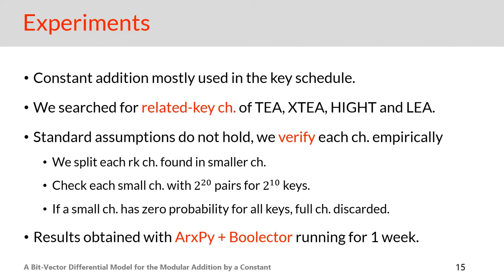We applied this model and tool to search for characteristics of ciphers including constant addition. Unfortunately, constant addition has mainly been used in the key schedules of ciphers, because up to now it was very difficult to search for characteristics of ciphers including constant addition, so designers avoided using it in the round function so they could easily argue differential security. That's why we instead search for related-key characteristics — meaning a pair of characteristics — where one goes over the key schedule and the other goes over the encryption part, reusing the round key differences from the first characteristic. The target ciphers we consider are XTEA, TEA, HIGHT, and LEA.